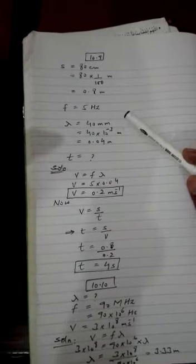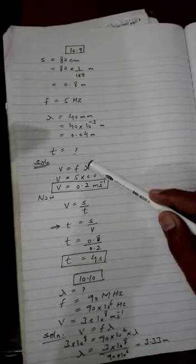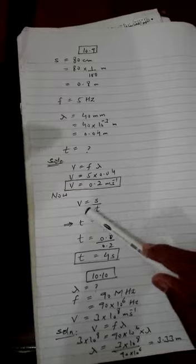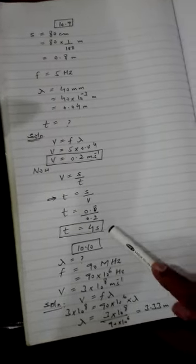The waves need to cross that tank. The data and solution is given over here. You need speed, so V equals F lambda. You will get the speed. Then for time, speed is distance over time. You will get the time. Last numerical, 10th numerical.